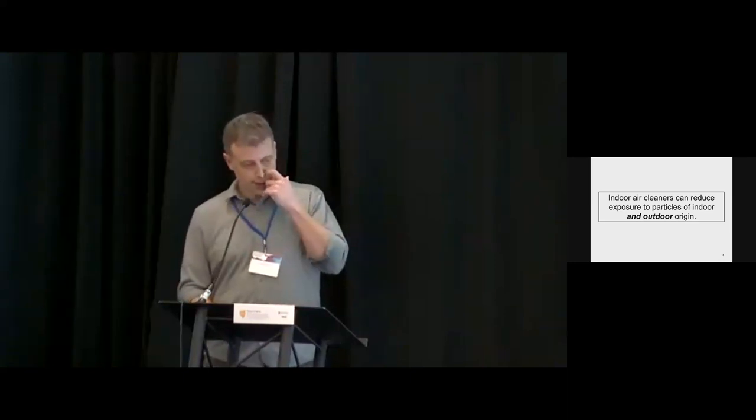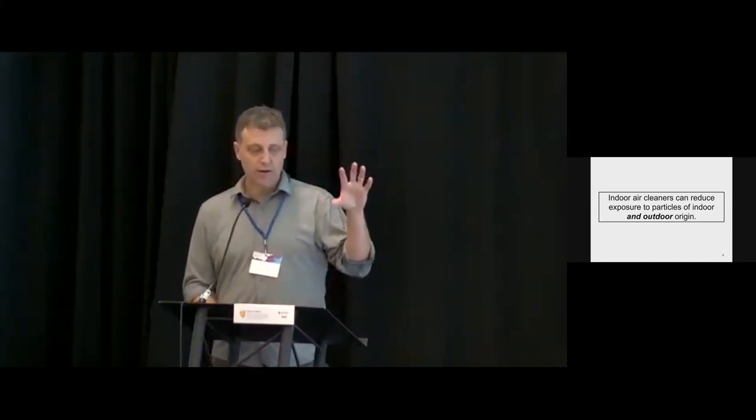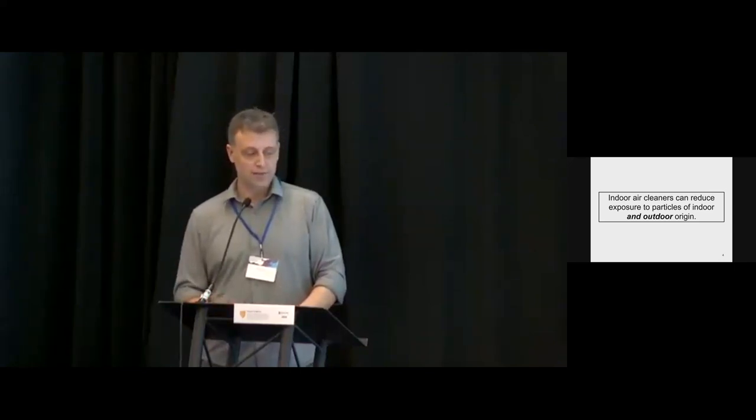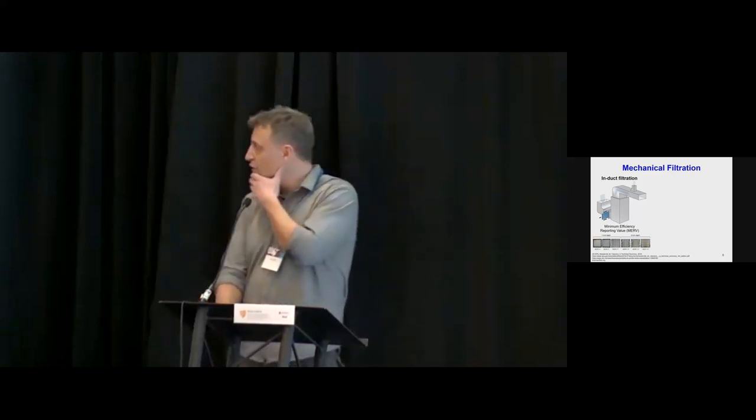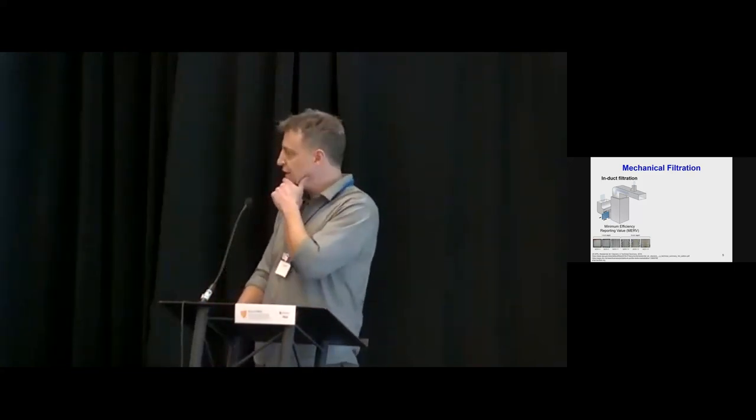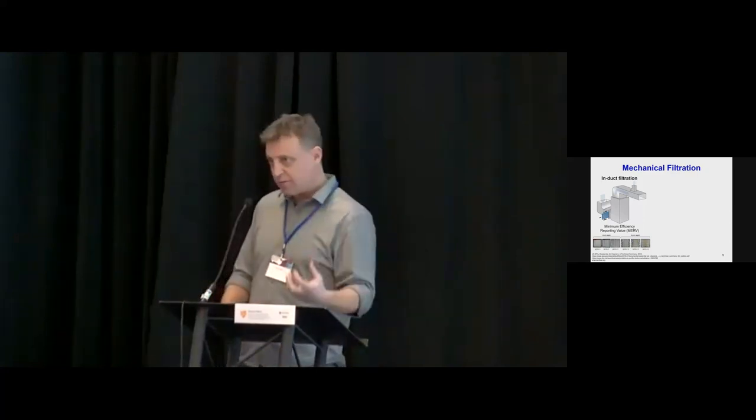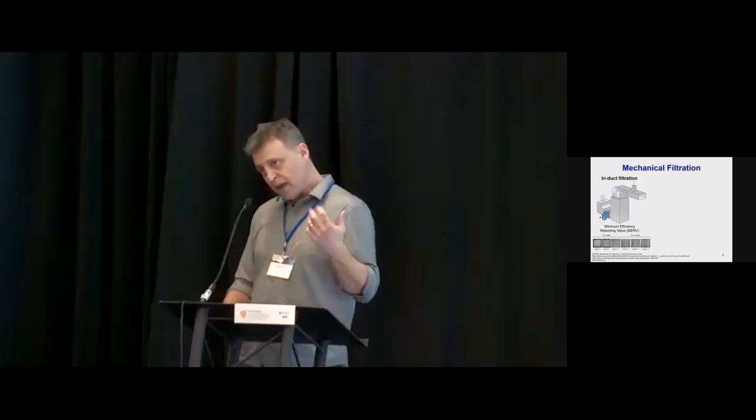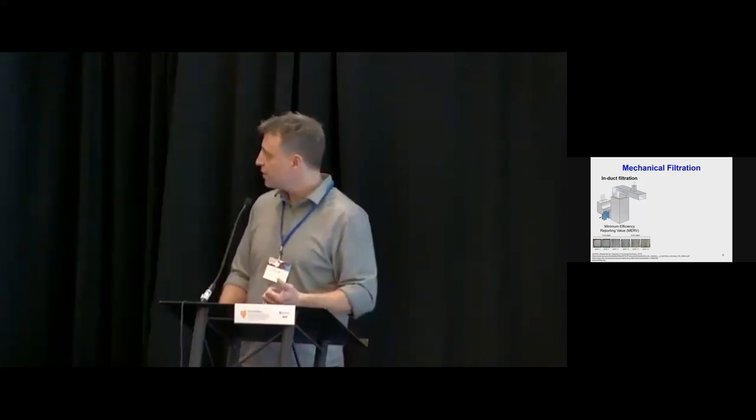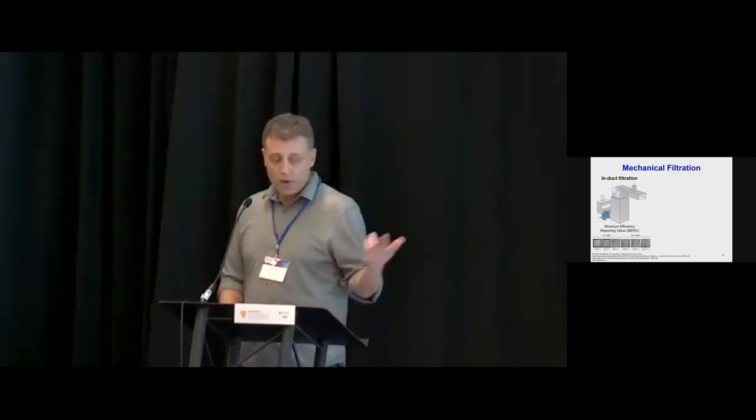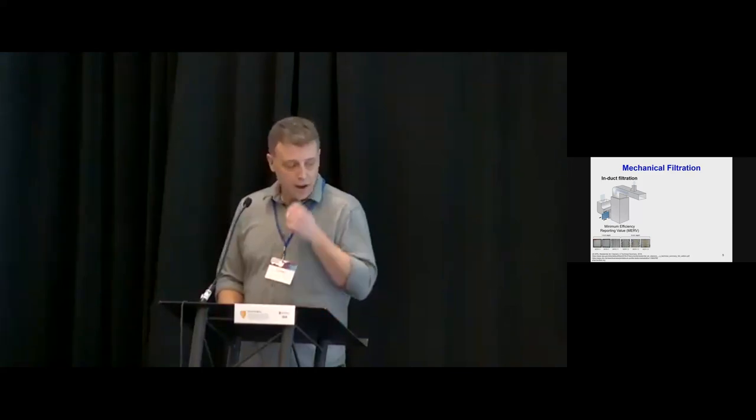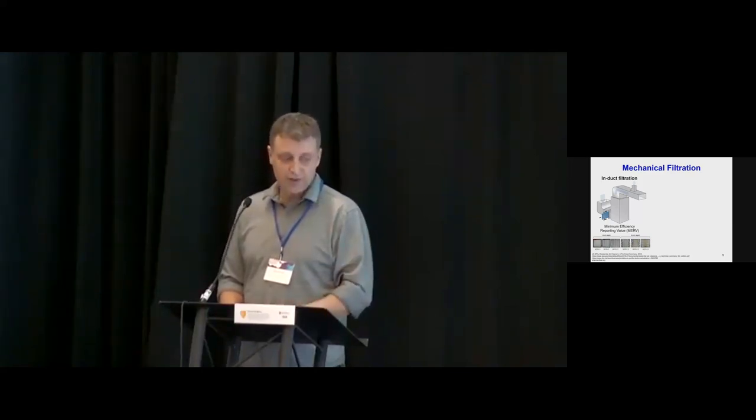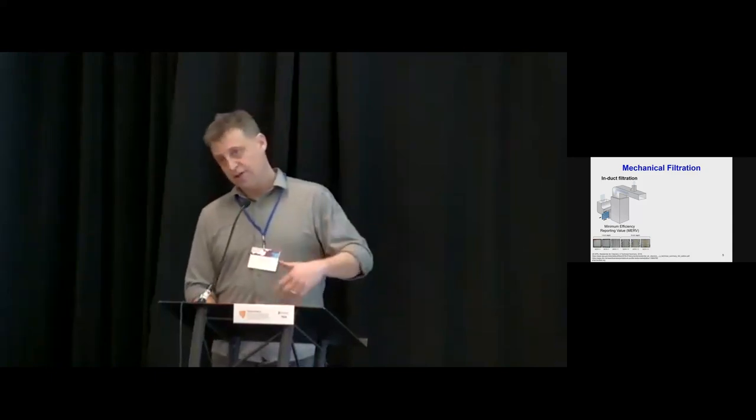These box plots are from a study in the U.S. where we estimated infiltration efficiencies in 500-something homes. The average infiltration efficiency was about 0.6. So 0.5, 0.6 is a reasonable approximation of the central tendency. When you put those ideas together, a lot of our exposure to outdoor-generated pollution actually occurs while we're indoors. For many people, the majority of exposure to outdoor-generated PM2.5 occurs when we're indoors. Indoor air cleaners can reduce exposure and potentially health effects to particles of indoor and outdoor origin.